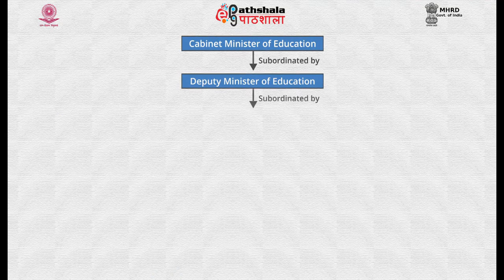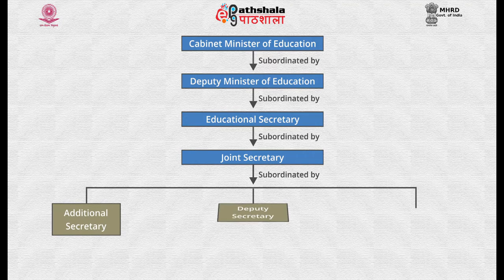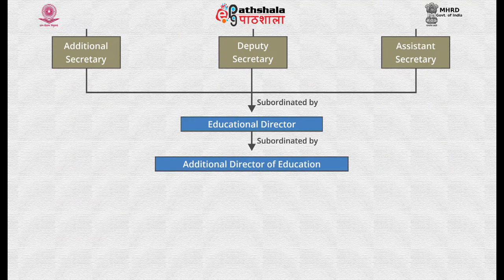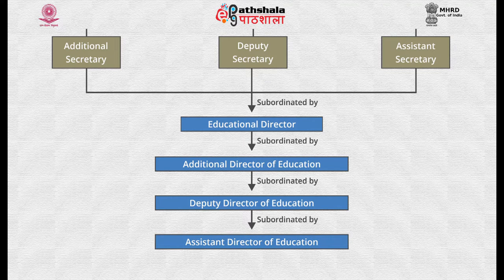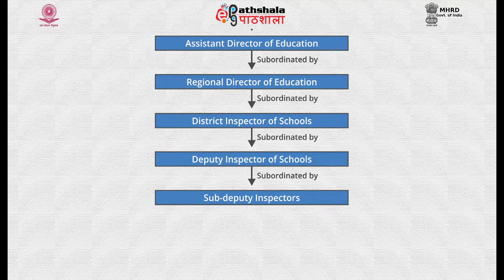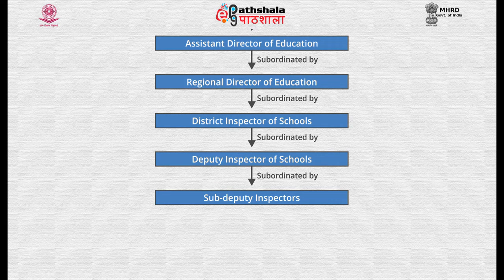At the state level, the educational administration is structured as follows: at the top is the cabinet minister or education minister, followed by the deputy minister of education, then the educational secretary, then the joint secretary education under whom there are an additional secretary, a deputy secretary and an assistant secretary. Next follows the educational director, then the additional director of education, then the deputy director of education, then the assistant director of education, next the regional director of education, then the district inspector of schools, next the deputy inspector of schools, and at the end the sub-deputy inspectors.